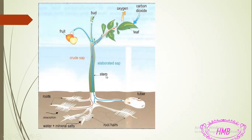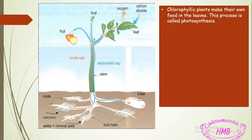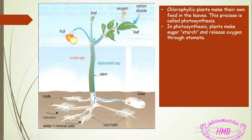The plant needs sunlight, water, minerals, and carbon dioxide to make its own food. The food will be made in the leaves, and when it is made, oxygen and sugar — which is the starch — will be released. These were confirmed in previous experiments shown in previous videos on my channel. Chlorophyllic plants make their own food in the leaves, that's why we call them producers, because they produce their own food to have energy.